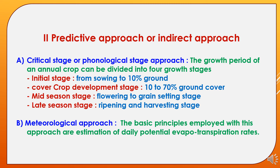The second theoretical approach is the predictive or indirect approach. The first sub-approach is the critical stage or phenological stage approach. The growth period of an annual crop is divided into four stages: the initial stage (sowing to 10% ground cover); the crop developmental stage (10% to 70% ground cover); the mid-season stage (flowering to grain setting); and the late season stage (ripening and harvesting). The second sub-approach is the meteorological approach, which estimates daily potential evapotranspiration rates.